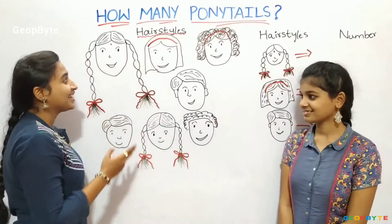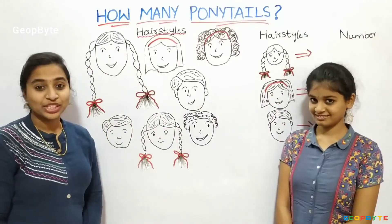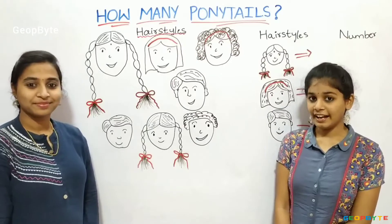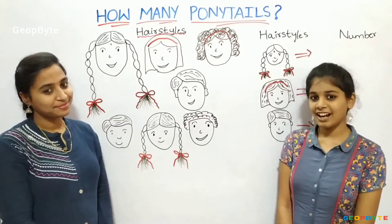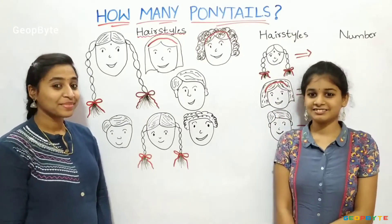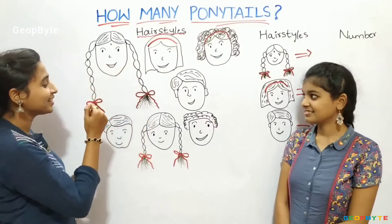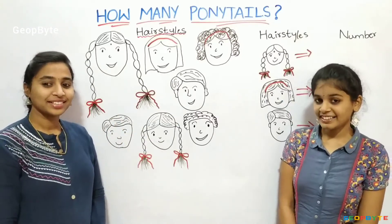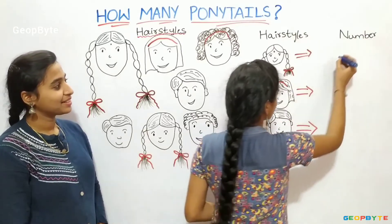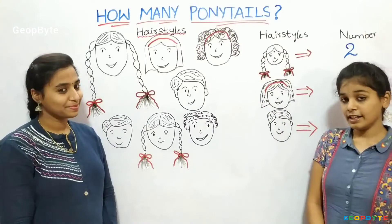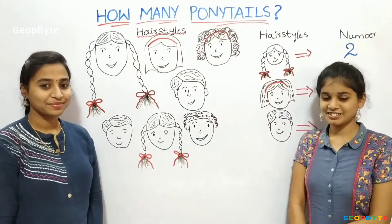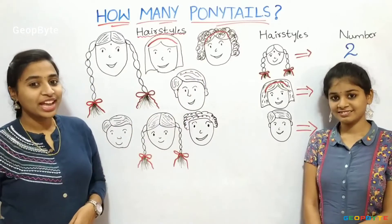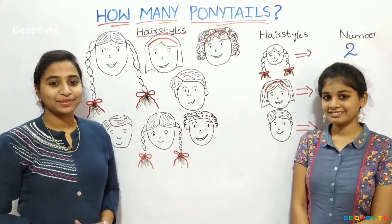Hey kids, see here. We have a few children with different hairstyles. Now let us count each hairstyle and write the number. Let us count this hairstyle: 1, 2. We have two children with the same hairstyle — let us write 2. Now let us count this hairstyle: 1, 2. We have two children with the same hairstyle.